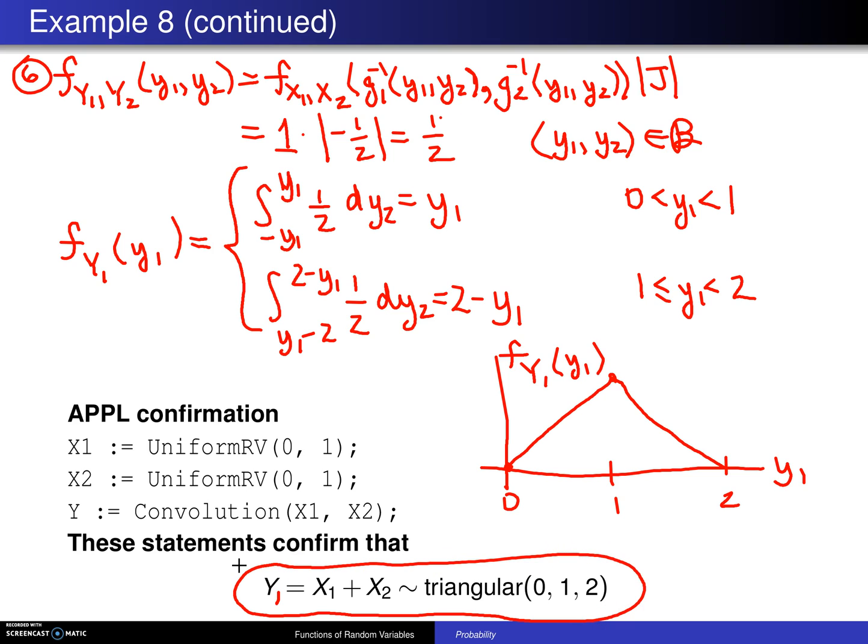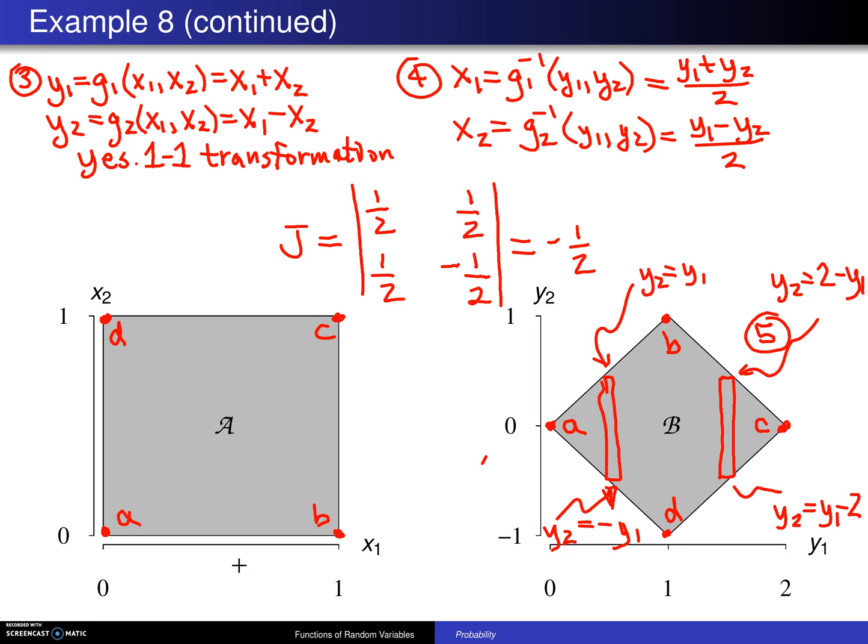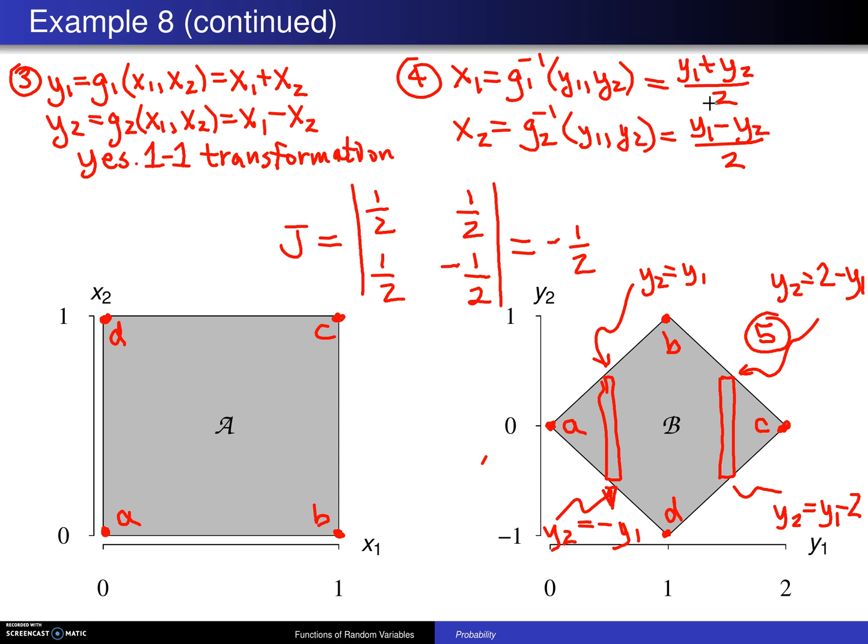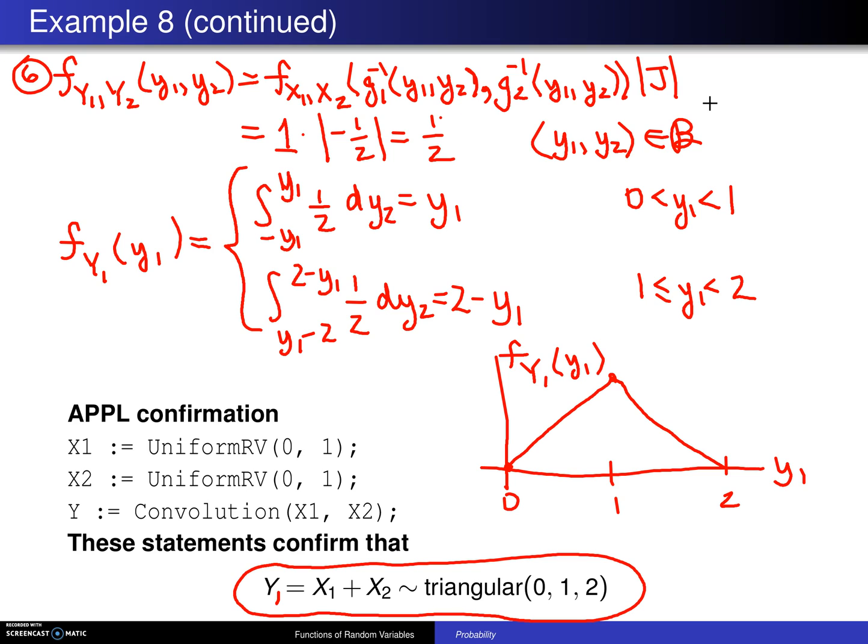This is sometimes counterintuitive because people can sometimes say, well, if you add up two uniform 0, 1s, you should get a uniform 0, 2, but you don't. Just as when you roll a pair of fair dice, you're not uniformly distributed between 2 and 12, 7 is the most likely. So finally, to confirm this in APPL, you can set x1 to a uniform 0, 1, x2 to a uniform 0, 1, and then set y to the sum or convolution of x1, x2. They will confirm that x1 plus x2 has the triangular distribution.